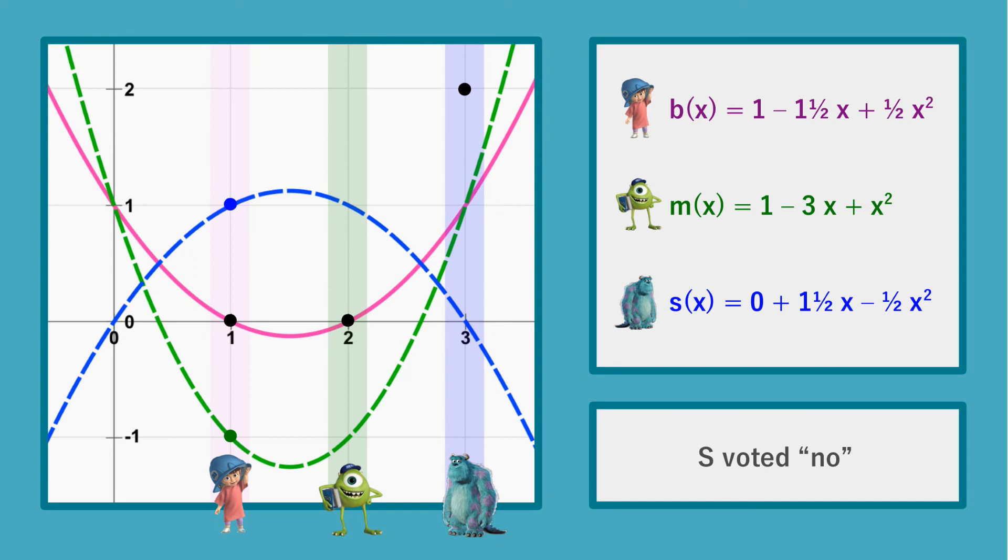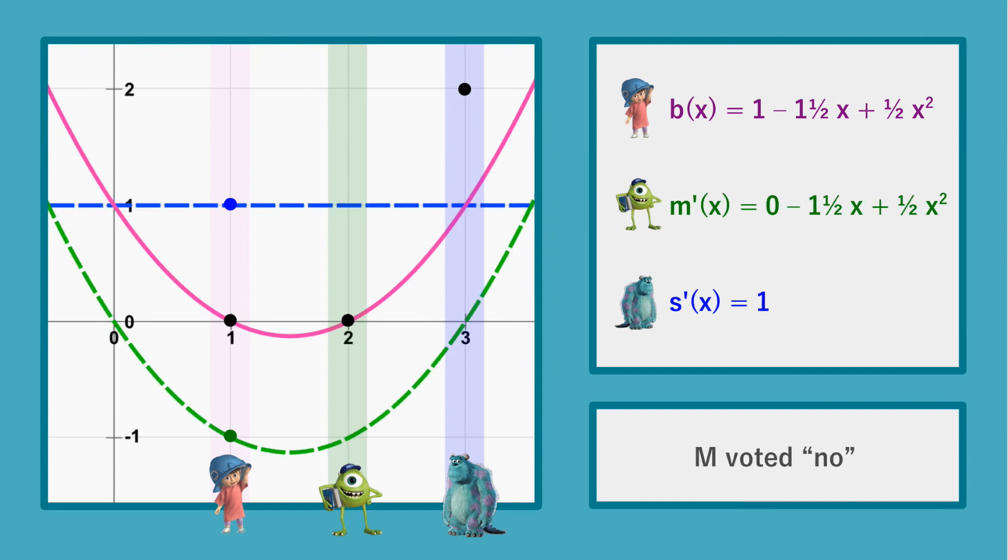However, based on Boo's information, it is equally likely that Mike voted no and Sully voted yes, because there exist choices for the coefficients of their polynomials that would keep this in line with the information that Boo observed.